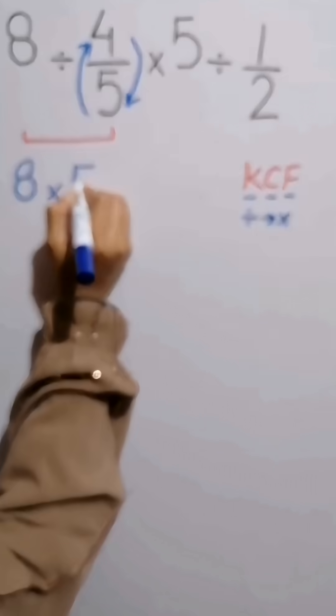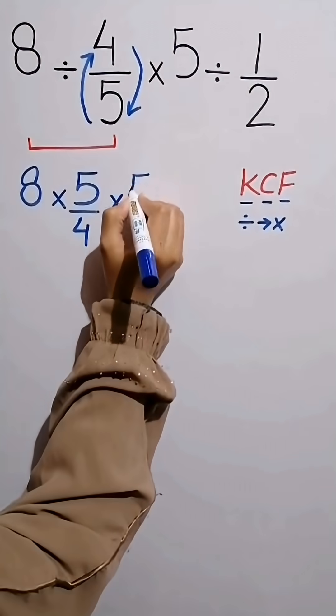4 over 5 becomes 5 over 4. Then times 5 divided by 1 over 2.